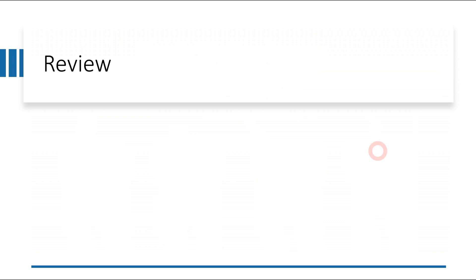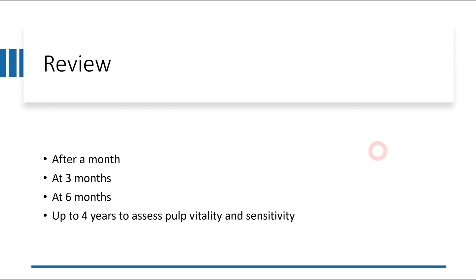After placing all restorations and sending the patient home, we evaluate at certain time intervals to see how the root apex is closing and the healing process. After one month we review for any discomfort or pain and take an x-ray. Then after three months we further evaluate the condition of the tooth, then at six months, and finally up to four years we check for pulp vitality and sensitivity — because if the pulp has undergone necrosis or is no longer vital, we will eventually go for root canal treatment.